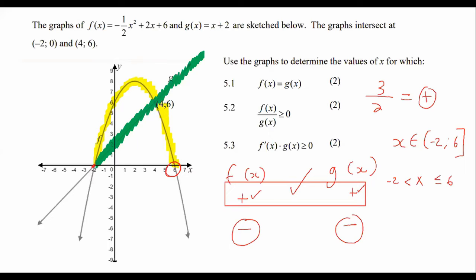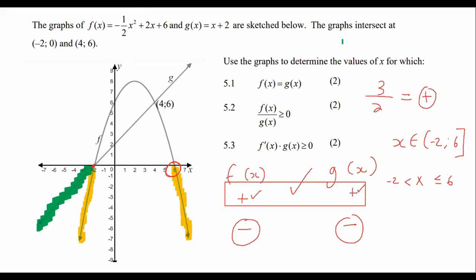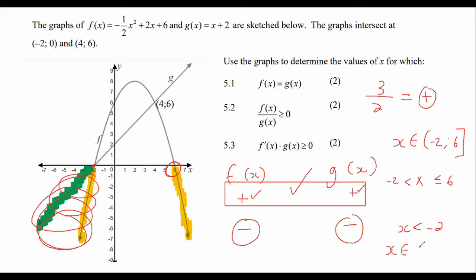So let's erase all of that and start over. Where is graph F negative? Graph F is negative here and over here. Now where is graph G negative? Is there a place on the diagram where both graphs are negative? Yes, there is — it's this area over here. For that part, we could say it is when X is smaller than negative two. For those who like interval notation, you could say X is an element from minus infinity up to negative two.